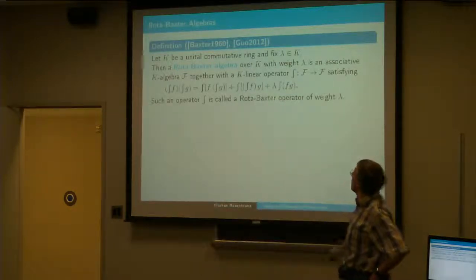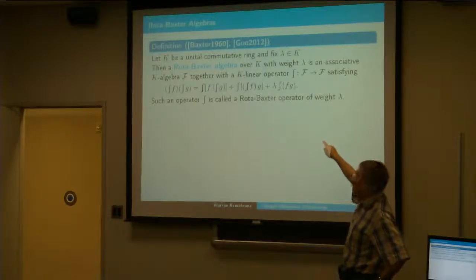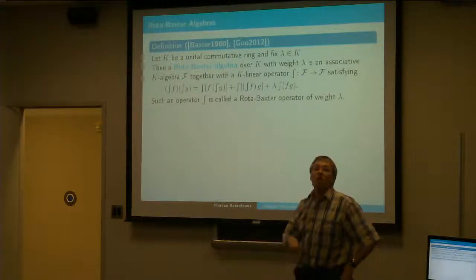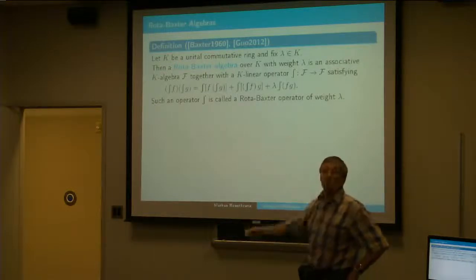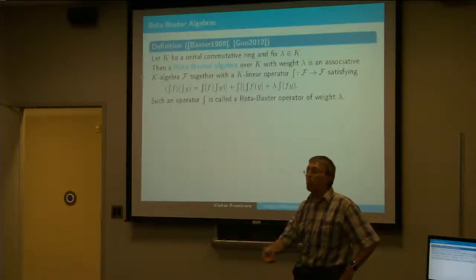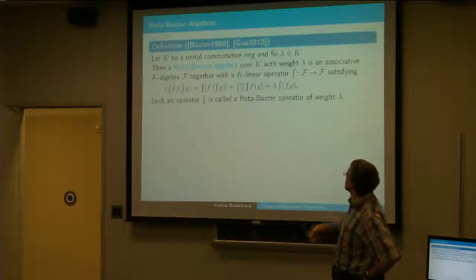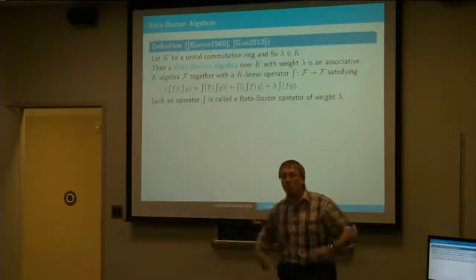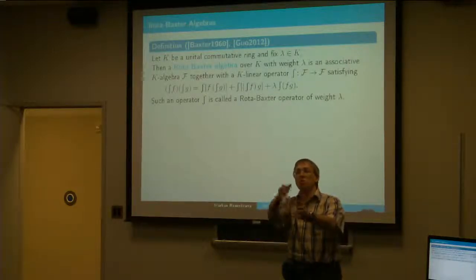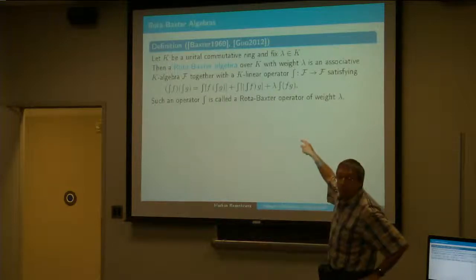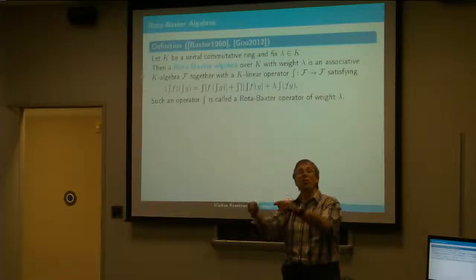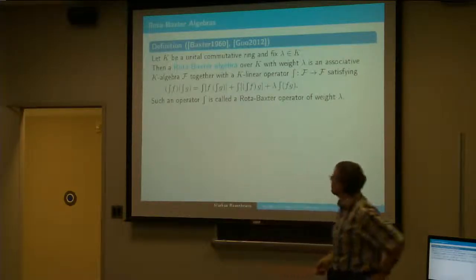The last term is called the weight term. When lambda is equal to 1, that's essentially the only interesting case — either it's 1 or it's 0. When lambda equals 1, then typically it describes a summation operator. The case lambda equals 0 is the continuous case of actual integration of C-infinity functions. And the case lambda equals 1 is partial summation — you accumulate partial sums — giving weight lambda equals 1 or minus 1, corresponding to a forward or backward difference operator in the difference algebra.